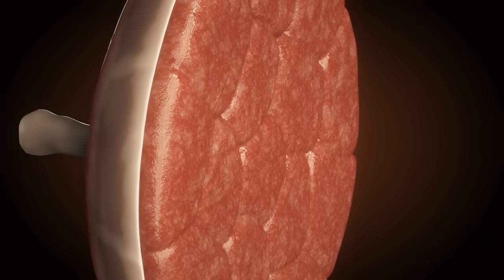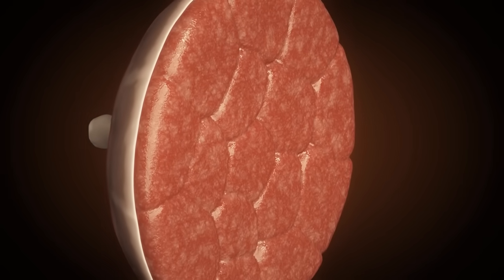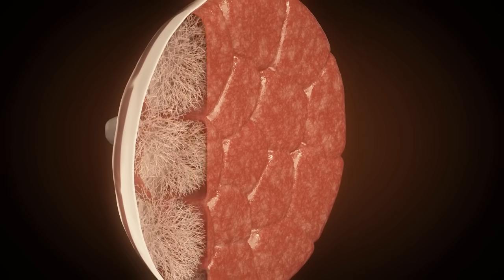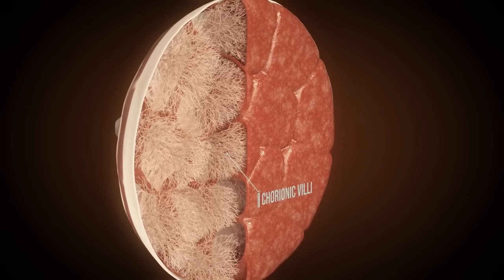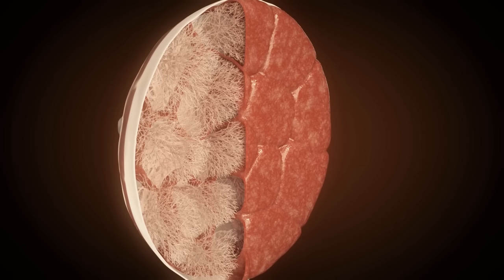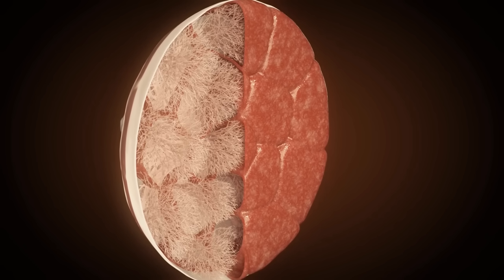The placenta is responsible for the exchange of substances between mother and fetus. The chorionic villi, which were previously completely distributed over the chorion, have regressed to other parts of the uterus. The remaining villi are part of the placenta.